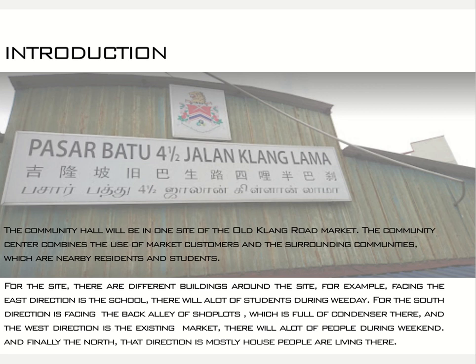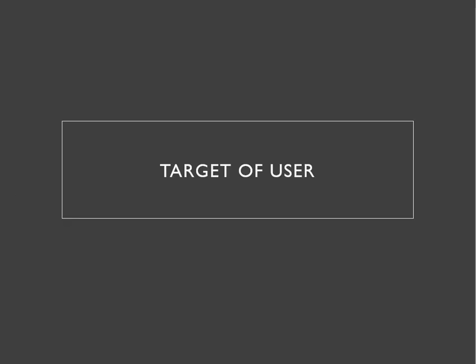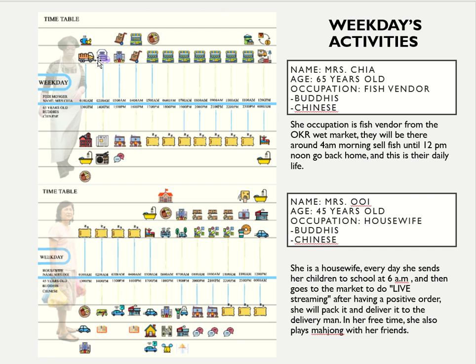For this project study, we conducted interviews and research on the daily activities of users, which are the fish vendor and the housewife. So there are two different users. The first one is the fish vendor. She works as a fish vendor at the Oklang Lood market. They arrive early in the morning, sell fish until 12 noon, then go back home. This is their daily routine.